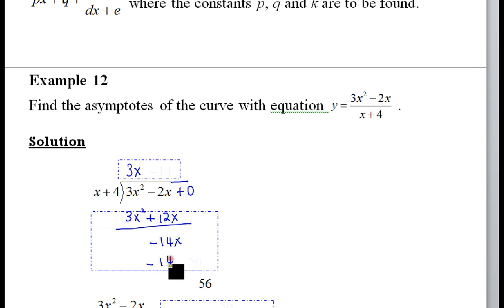Then negative 14x minus, oh sorry, minus 14 here, 56, then plus zero. Then you get 56 and this one.